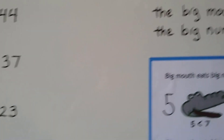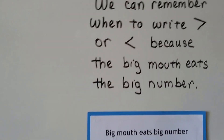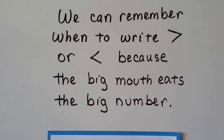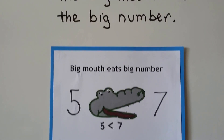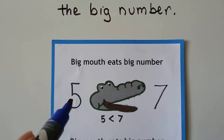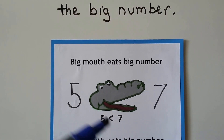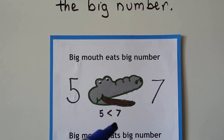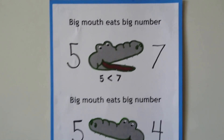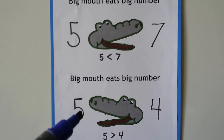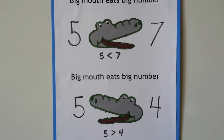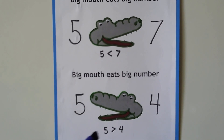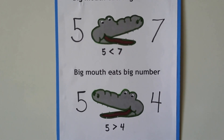So we can remember when to write greater than or less than because the big mouth eats the big number. Five is over here and seven is over here, and the big mouth is going to eat the bigger number — five is less than seven. Now the five is on this side and four is on this side, and five is now the bigger number. So five is greater than four.